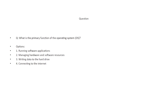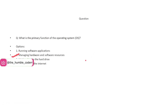What is the primary function of the operating system? The options are: running software applications, managing hardware and software resources, writing data to the hard drive, and connecting to the internet. The correct answer is option 2 — managing hardware and software resources.